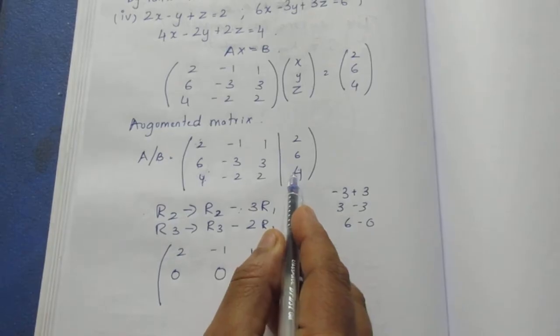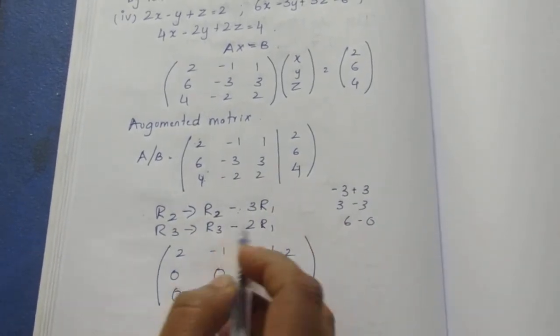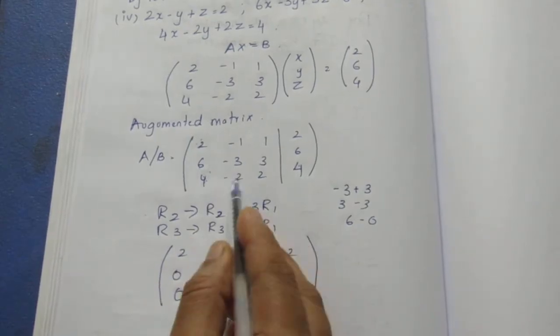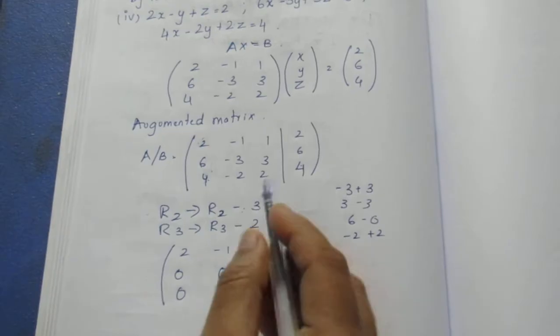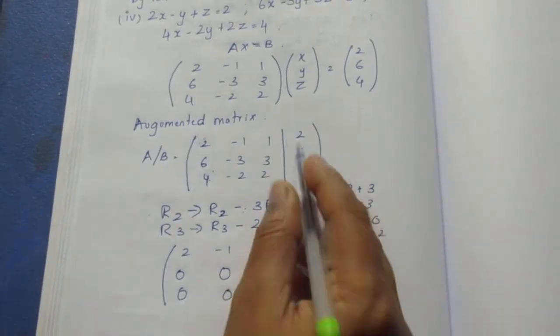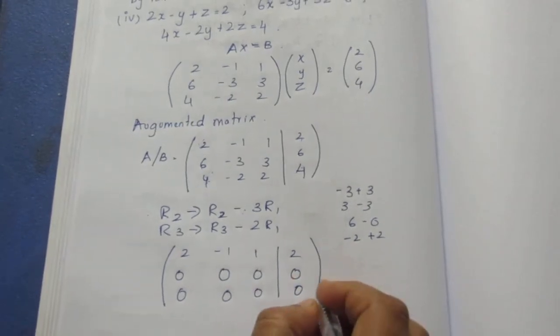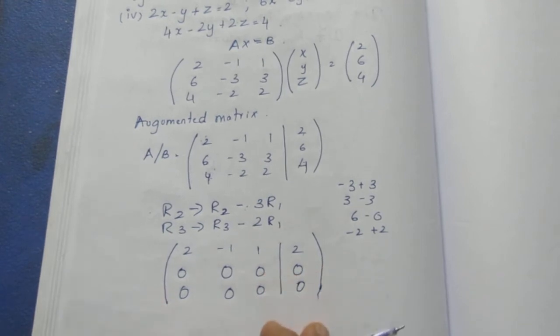R3 becomes R3 minus 2R1. 4 minus 4 is 0. Minus 2 plus 2 is 0. 2 minus 2 is 0. 4 minus 4 is 0.